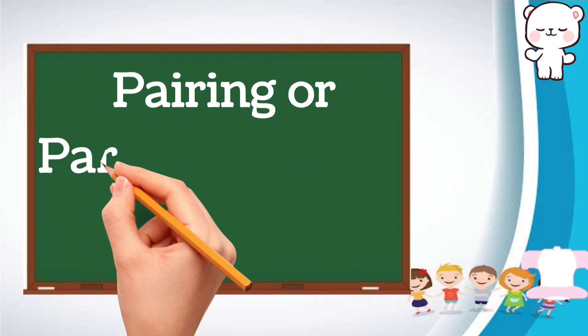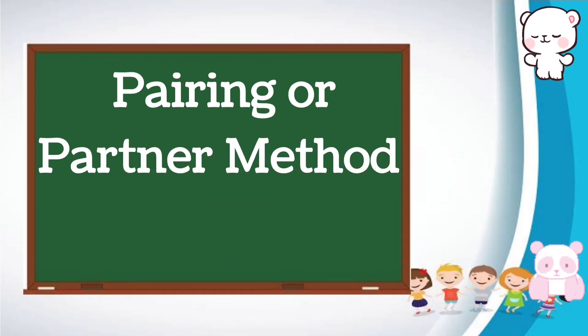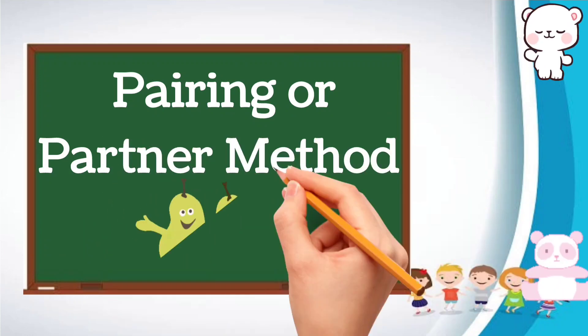First one is pairing or partner method. Pairing means a set of two.